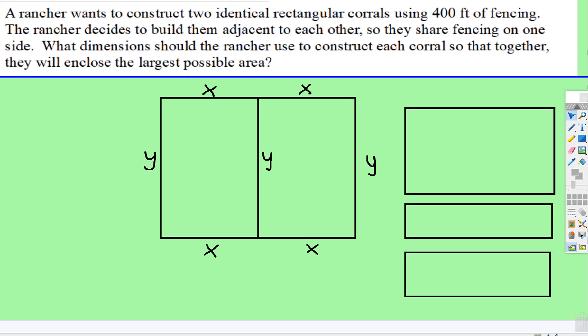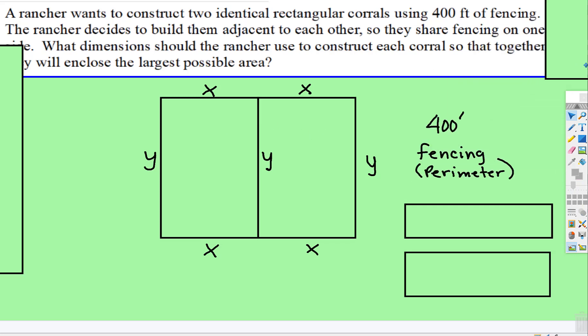And so, but what else do we know? Well, we know that if you add up all of those measurements right there, he only used 400 feet. So there's 400 feet of fencing, so how many x's are there? One, two, three, four, three y's. So the perimeter is 400 is equal to 4x plus 3y.